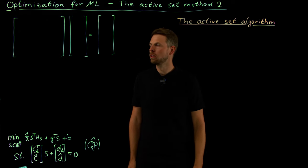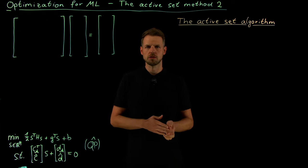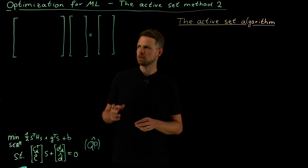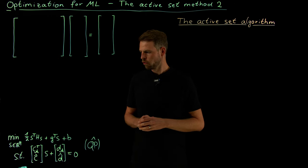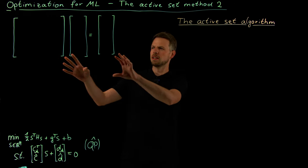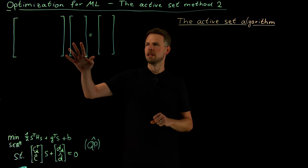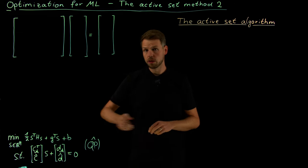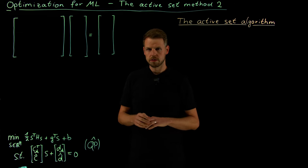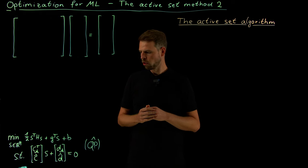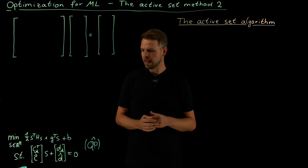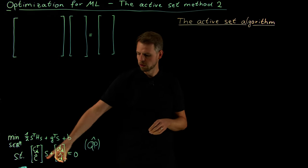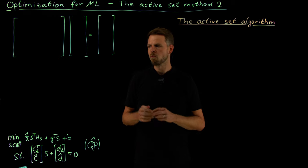Welcome back to our last video in our sequence on optimization for machine learning, and in particular about constraint problems that we have been discussing for quite some time. I've prepared our optimality condition which I'm going to fill out in a second, and this is the problem we ended up with last time: our original constraint optimization problem replaced by a local quadratic approximation of the loss function and a local linear approximation of the constraints.